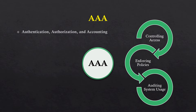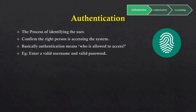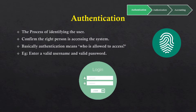The first step refers to authentication, which is the process of identifying the user. This confirms the right person is accessing the system, typically done by usernames and passwords. When you claim to be someone, it is called identification — for example, claiming you are person X by giving your username or ID. But when you prove it, it is authentication — for example, verifying the username by providing the password.